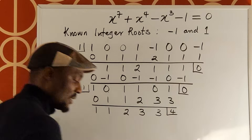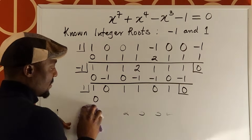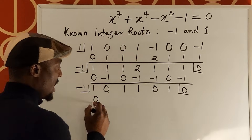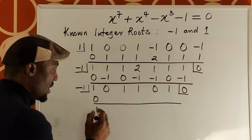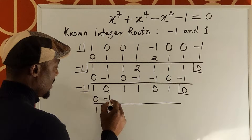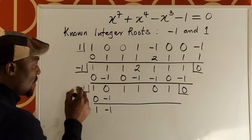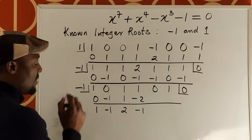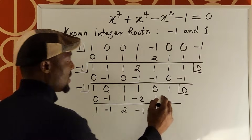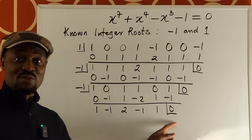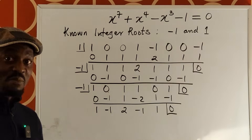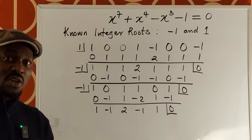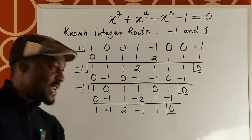Now let's test negative one again on the remaining polynomial. Going through synthetic division with negative one: one, negative one, two, negative two, minus one, one, one, negative one, and zero. We get a remainder of zero, which means negative one divides again. So the multiplicity of negative one is two. Our integer solutions so far are: one, negative one, and negative one again.